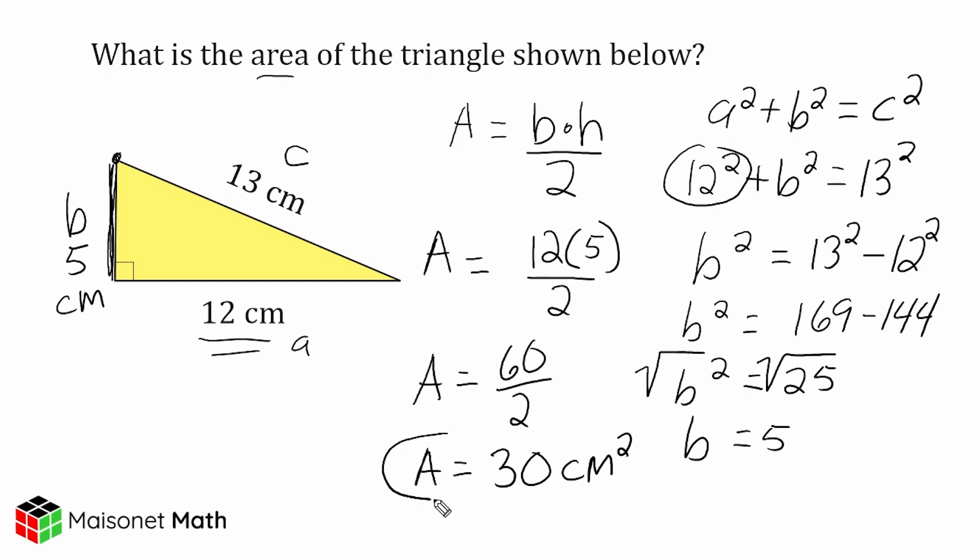Now one thing that we should remember about any right triangle is that the two legs that form the right angle of our right triangle can always be considered the base and the height of the triangle. Now you could use 13 as a base if you knew what the height would be perpendicular to the height of 13, but it's not given in this case and there's not enough information there. So it's just easier to use the two sides that make your right angle as the base and the height.